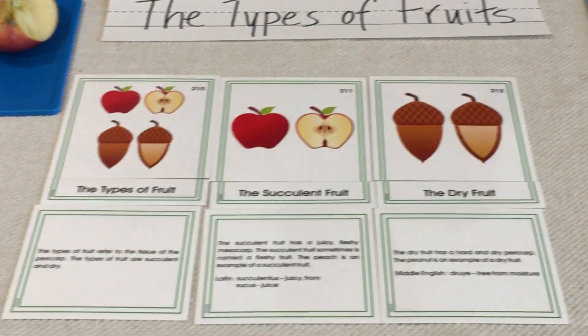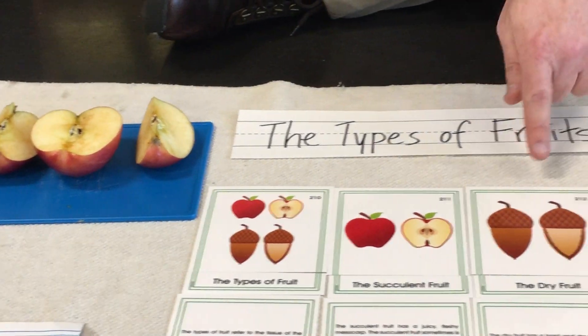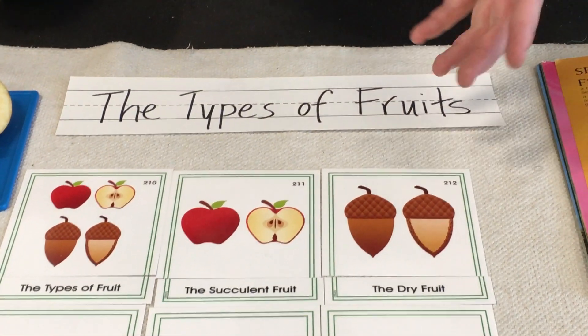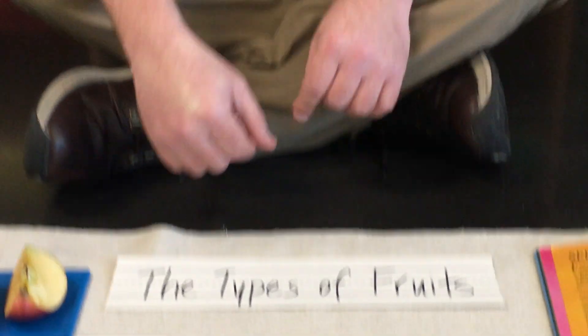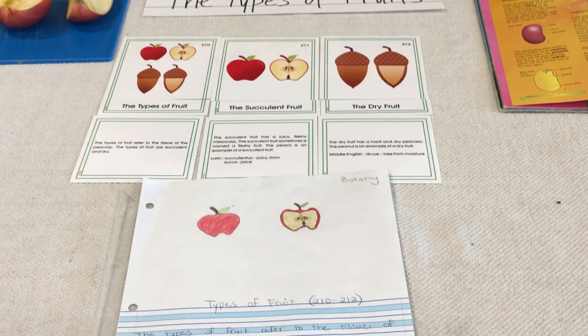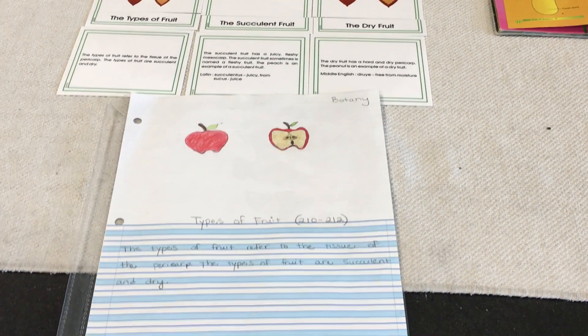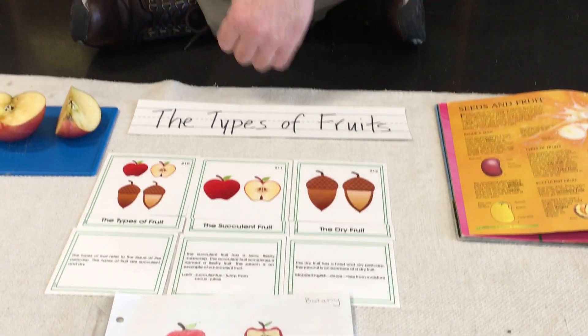That's it — there's only two types of fruit. It's either succulent and juicy, like apples, or it's dry and hard, like walnuts or acorns. You can make a drawing of the type of fruit you like the best, or you can make a drawing of both types and tell me about them. Very simple. The succulent fruit is juicy. The dry fruit is dry and hard. You could use some research to figure out what types of fruits that you like that are dry and one that is juicy or succulent.